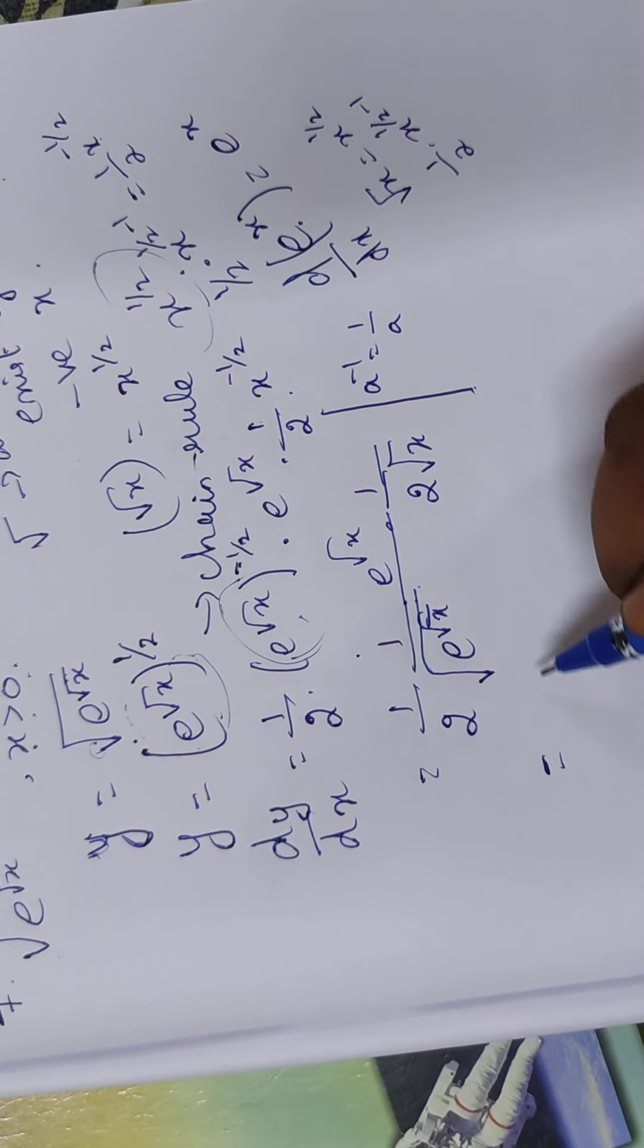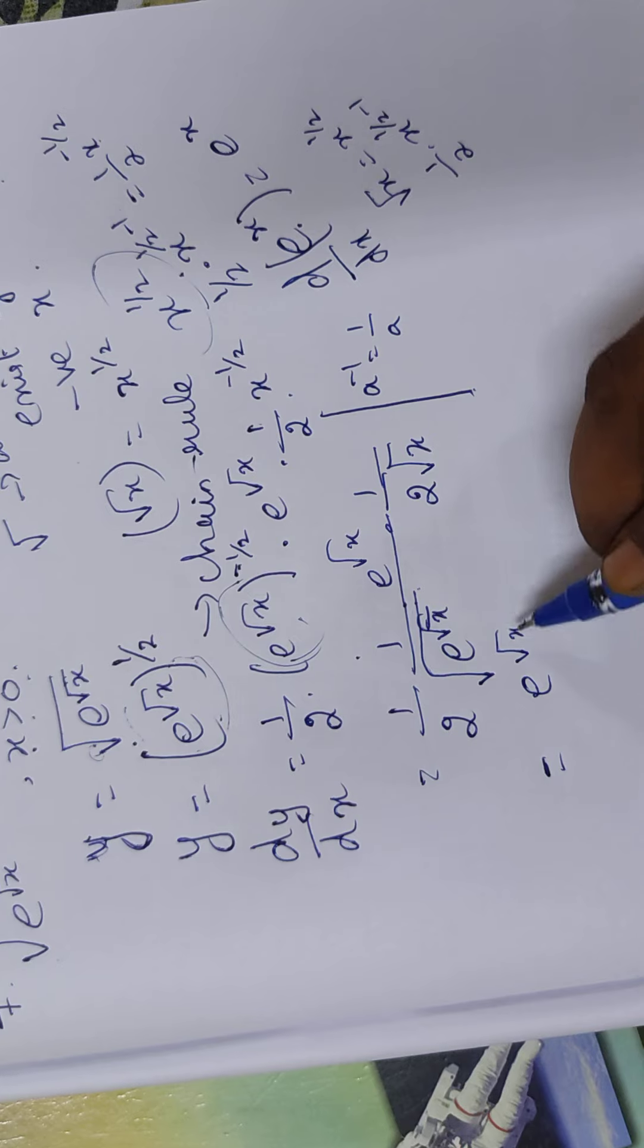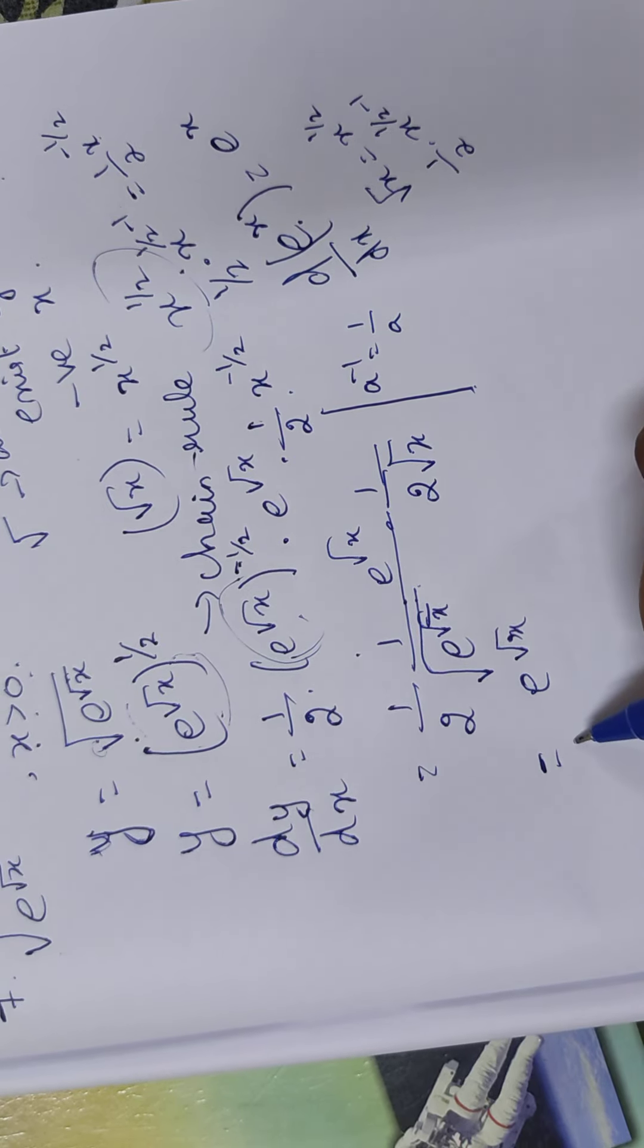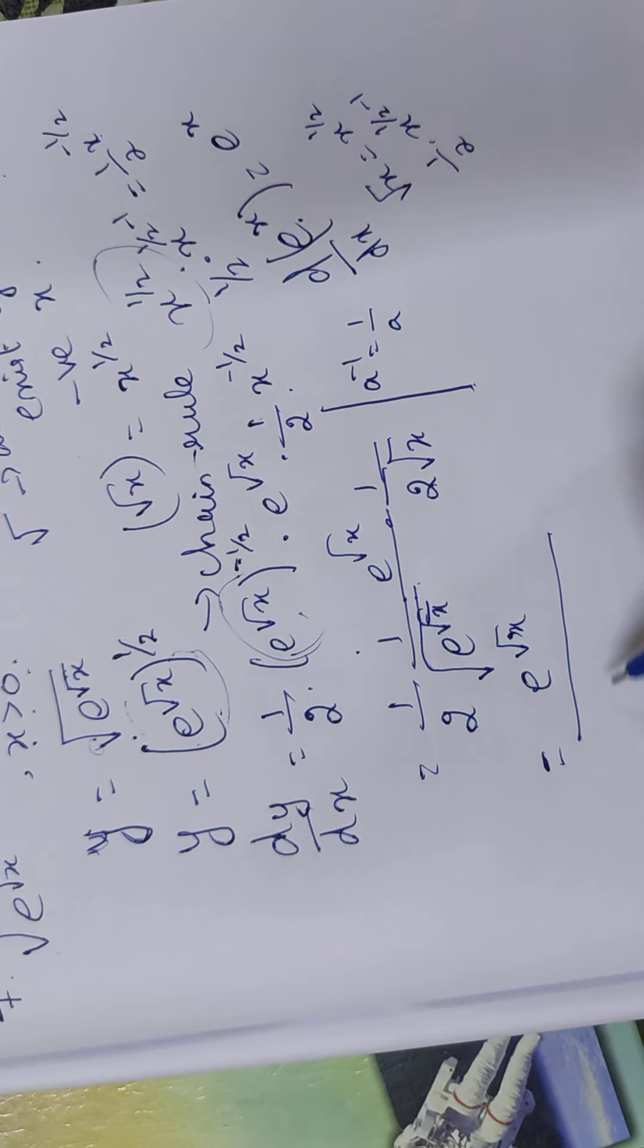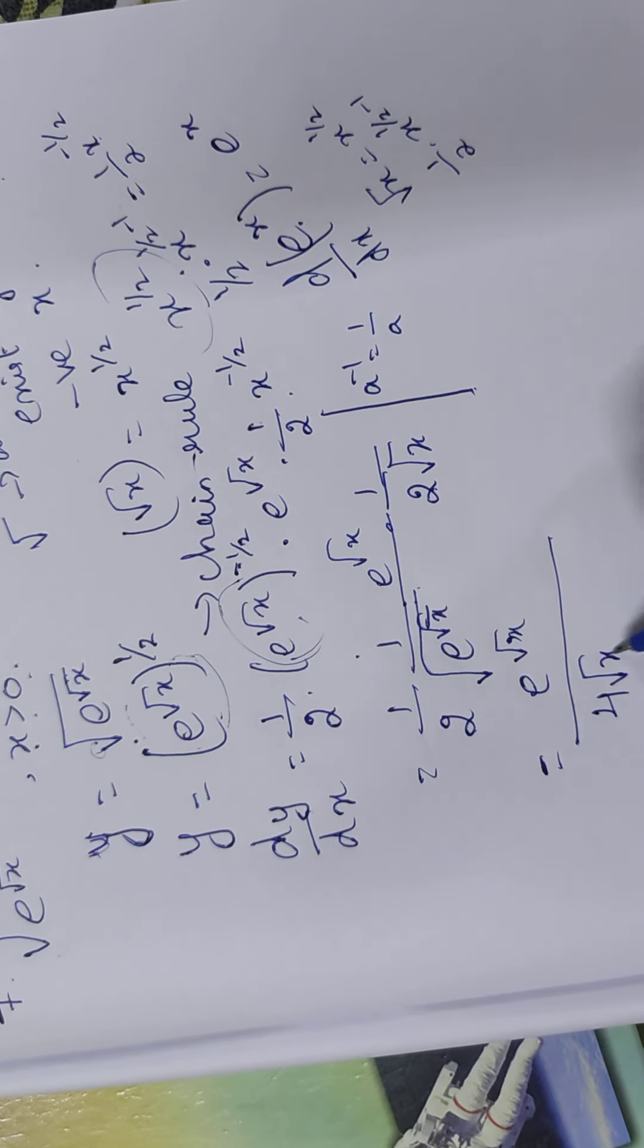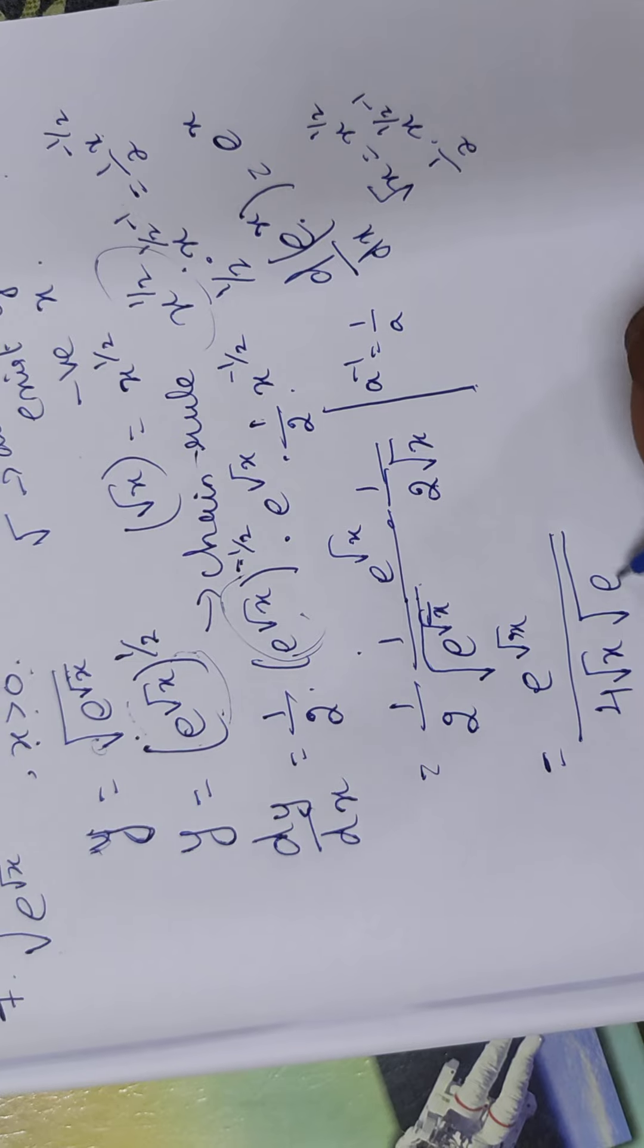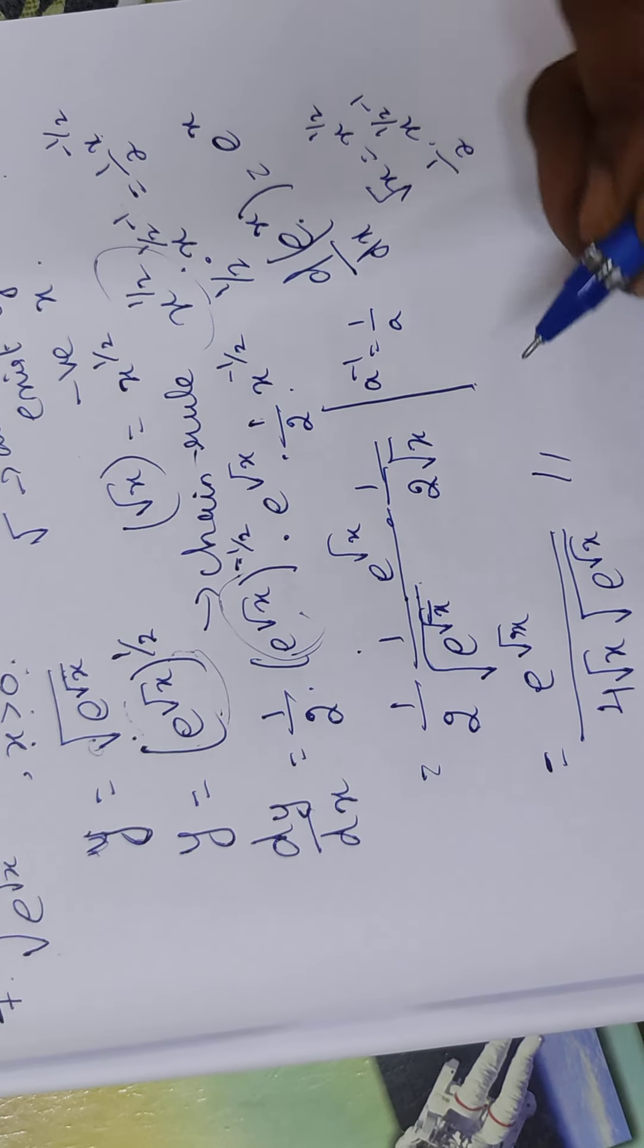So e to the power root x. And it is divided by 2 into 2. 4, root x. And square root of e to the power root x. So this is the number.